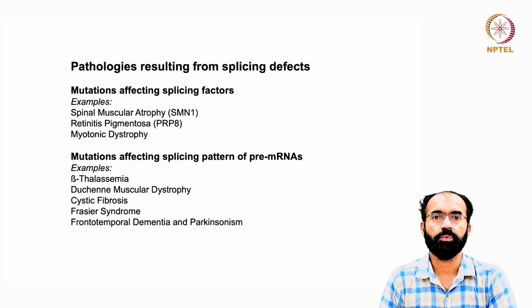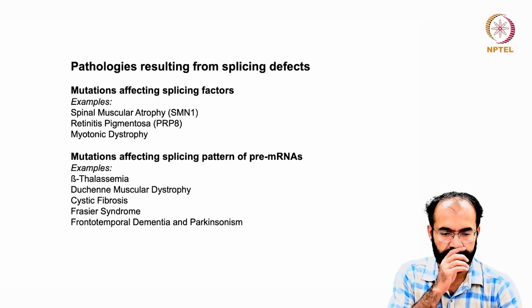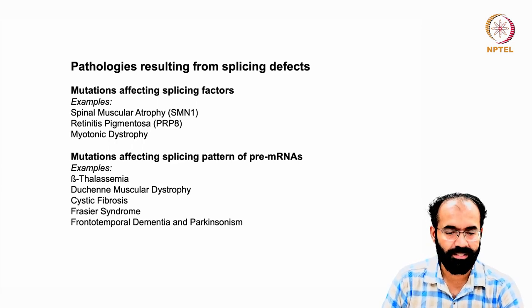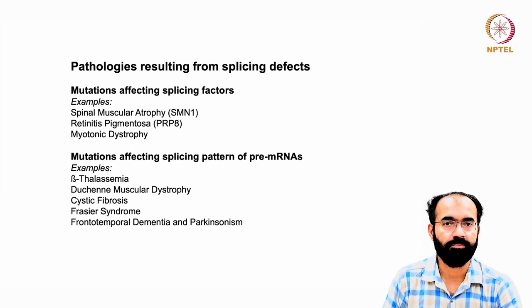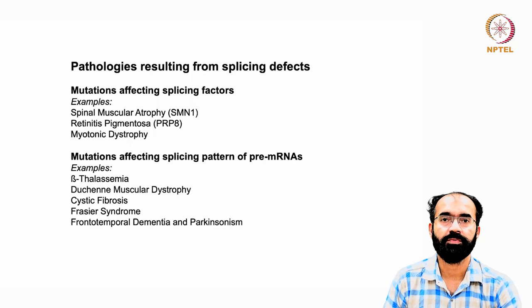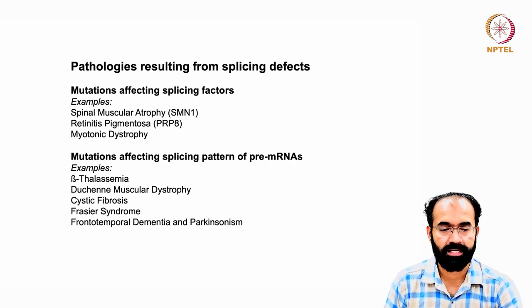Hello everyone. Welcome back to another session of RNA biology. In the previous class, we were talking about mutations and splicing defects that can lead to various human diseases. From these examples, we should infer that RNA splicing is a very crucial step in gene expression. Even if RNA splicing has any defect, whether in the splicing machinery or a given candidate for splicing, the outcome can be quite devastating.